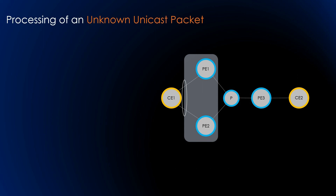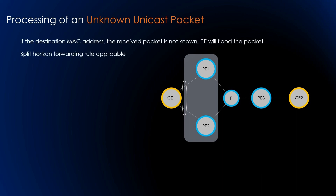Regarding unicast packet processing: if a PE learns a customer MAC address via the control plane protocol, the PE distributes that MAC address via BGP, and all unicast MAC addresses are learned prior to traffic reaching the destination. However, if the destination MAC address is not known by the PE, the PE may flood the packet. When flooding, split horizon rules must be taken into account — the split horizon forwarding rules in an EVPN solution are the same as those considered in VPLS. When a flood-capable PE receives an unknown destination MAC, it floods the frame to every Ethernet segment belonging to the same EVI for which it is the designated forwarder (DF), and also to all PEs participating in that EVPN instance.